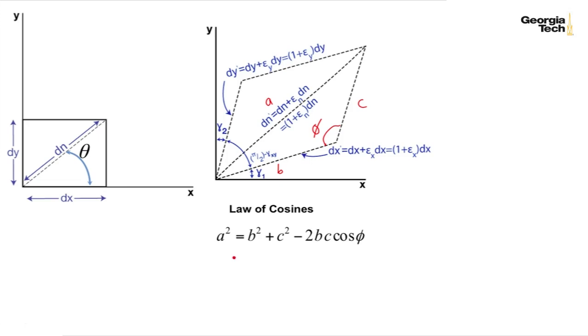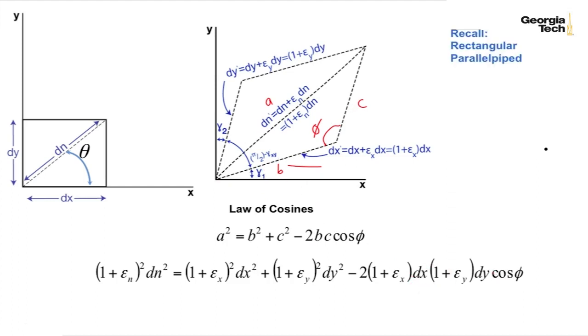And when I do that, this is the result I get. A is this distance dn prime, or we're going to square it now. So that's 1 plus epsilon sub n squared times dn squared equals b squared, which is this side squared. Okay, and then c squared, which is this side or the y side squared, minus 2 times b and times c, which we have here, times cosine of phi.